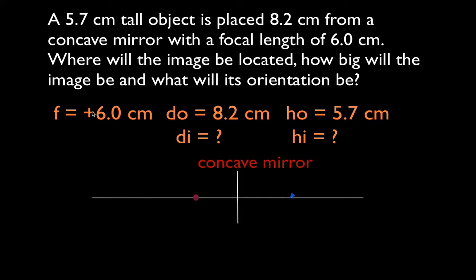I think it's a very good idea, before you start these problems, to make a quick sketch of the situation. We have a concave mirror. I put f and 2f. I remind myself that this is 6, this is 12. The object is 8.2 away, so I draw the object. Now I want to ask myself, what should my image distance be approximately?